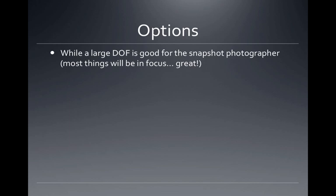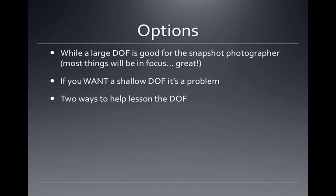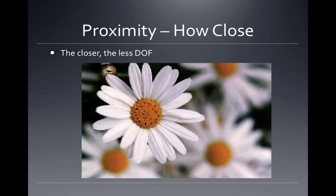While large depth of field is good for the snapshot photographer — most things will be in focus — if you want a shallow depth of field, it's a problem. Two ways to help lessen the depth of field: get close. The closer you are, the less depth of field. Here the camera is not far from that flower at all — probably just a few inches away. That makes it easy to blur the background. The depth of field is shallow because the focus is so close to the camera.